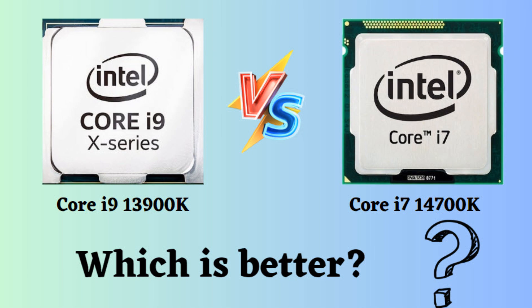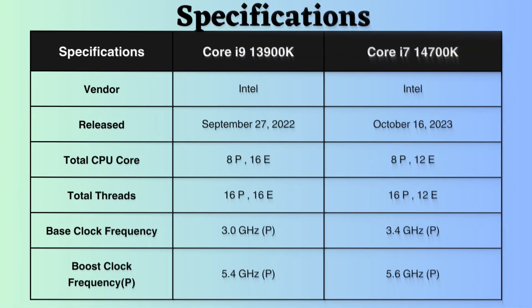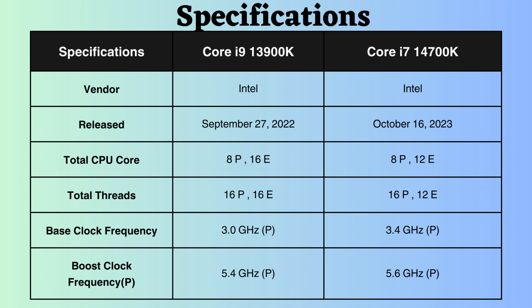In this video, I will compare the Intel Core i9-13900K and Intel Core i7-14700K, highlighting their differences, and then provide a conclusion to help you determine which one is the better choice. Both of these processors are from Intel, but they come from different generations and have different architectures. Let's examine their differences.